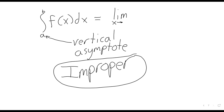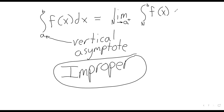In the situation where the vertical asymptote is at that lower limit of integration, this integral is going to be defined as the limit of an integral. It's the limit as capital N approaches a from the right of the integral from N to b of f of x dx.